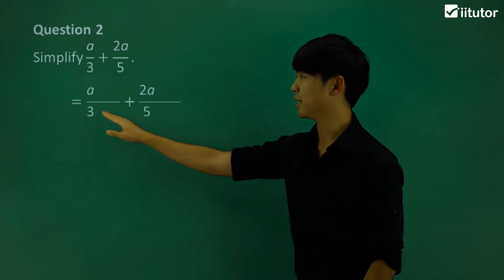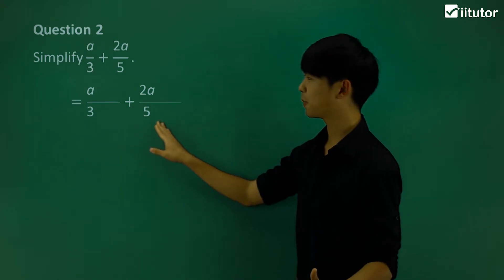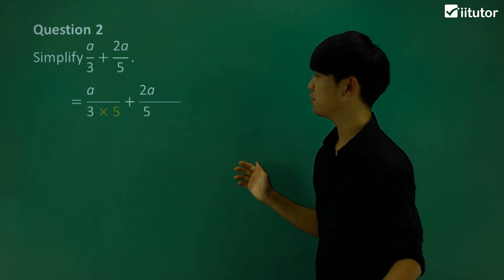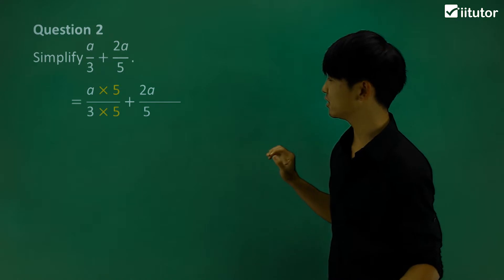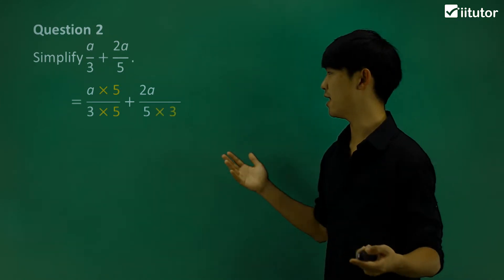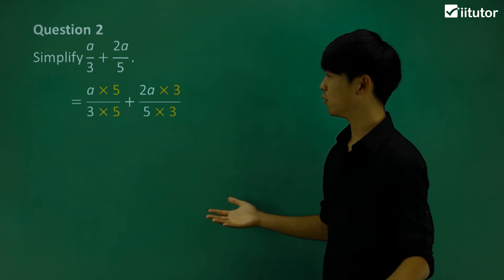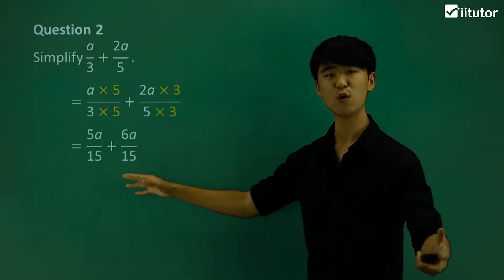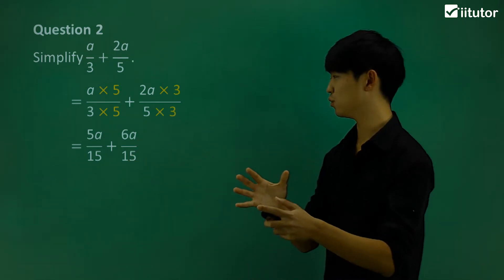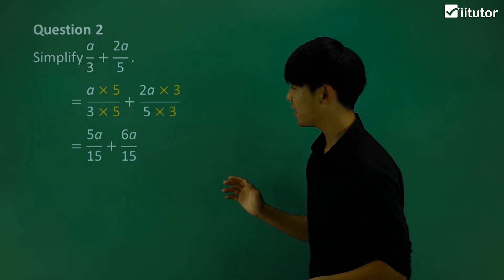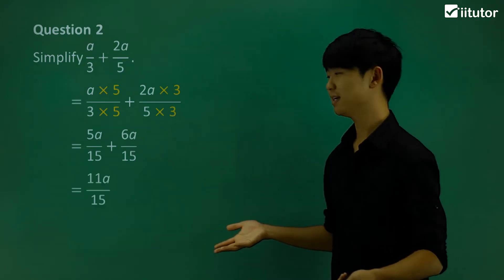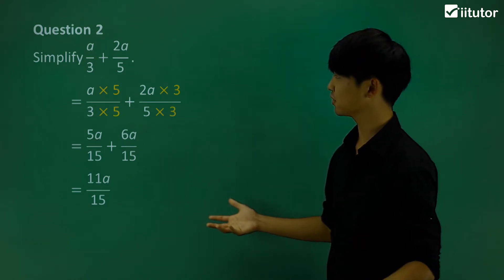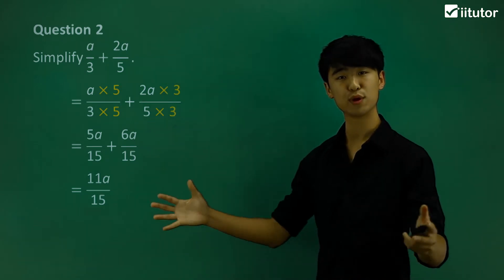Let's change the denominators to make them the same. I'm going to multiply my denominator and my numerator in my first fraction both by 5. In this fraction, I'm going to multiply top and bottom both by 3. Now they both have that same denominator of 15, so we can put the fraction into one single fraction. So 5a over 15 plus 6a over 15 is simply 11a over 15. We're just getting the same denominator so we can put it in a single fraction.